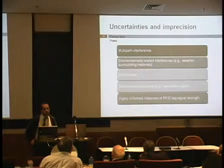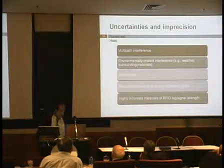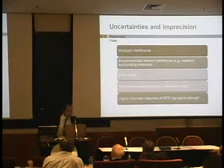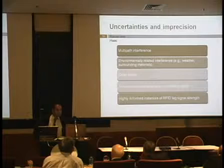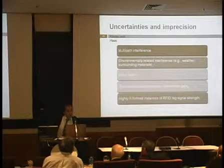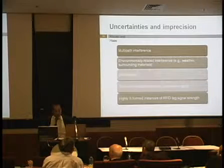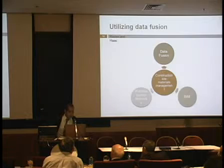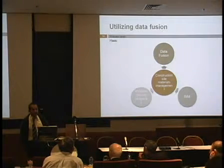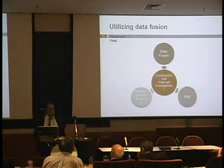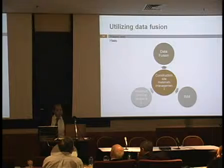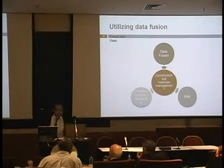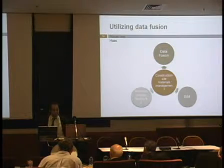Technologies are not perfect. There are always uncertainties and imprecision about technologies, even the most expensive ones. Some of the reasons behind these uncertainties include multi-path interference, environmental-related interference, dead space, antenna characteristics, and highly uniform instances of RFID tags. These were the reasons that the researcher tried to develop a data fusion model to reduce these uncertainties, using data fusion along with contextual information and sensing technologies to improve the construction site materials management.